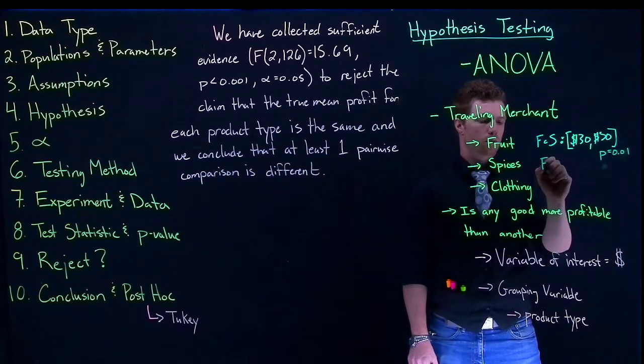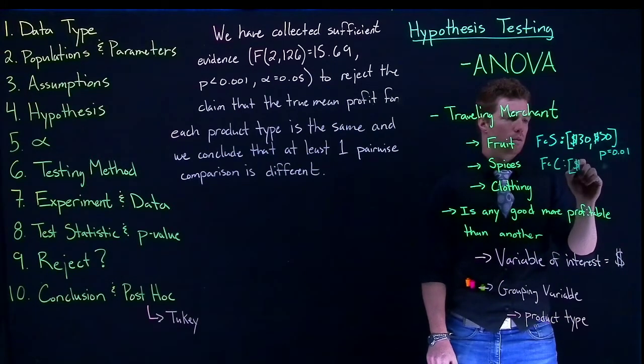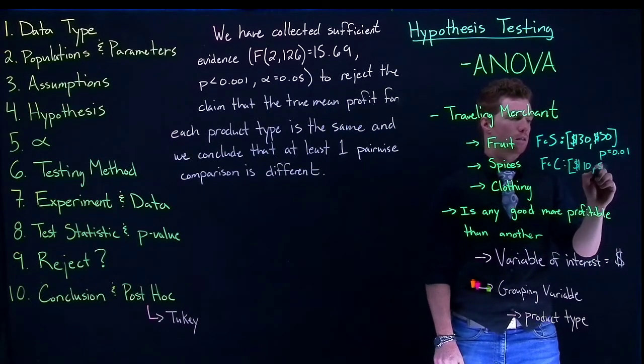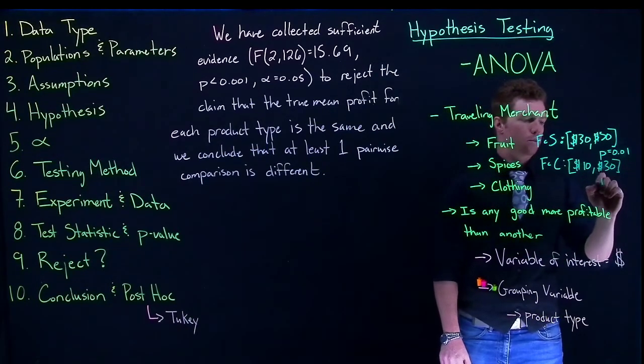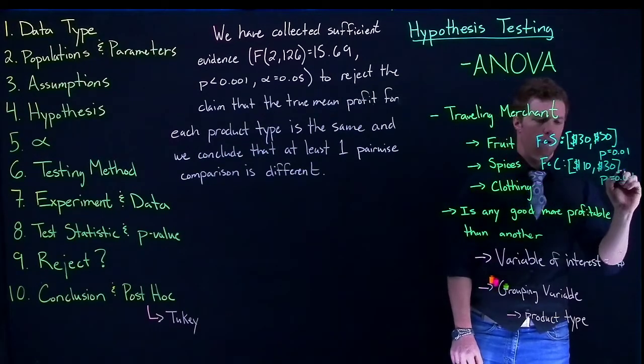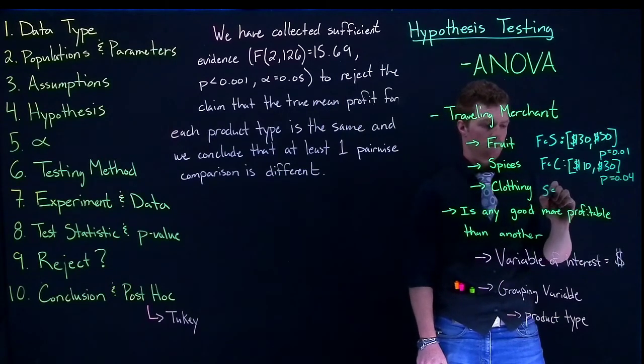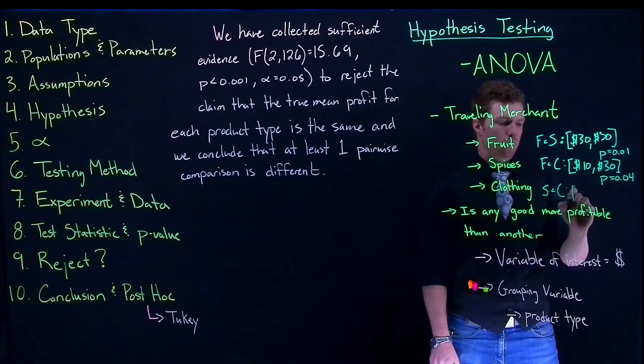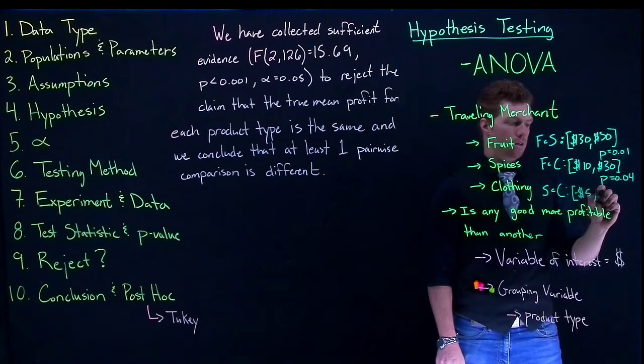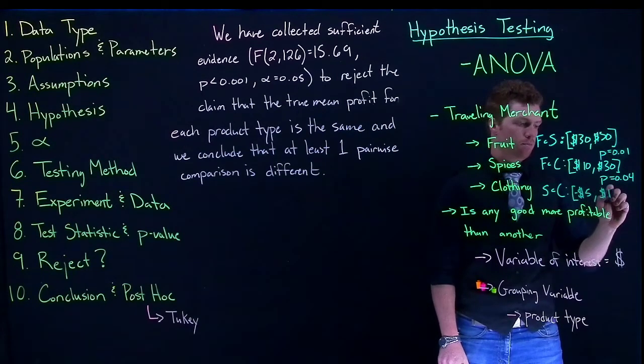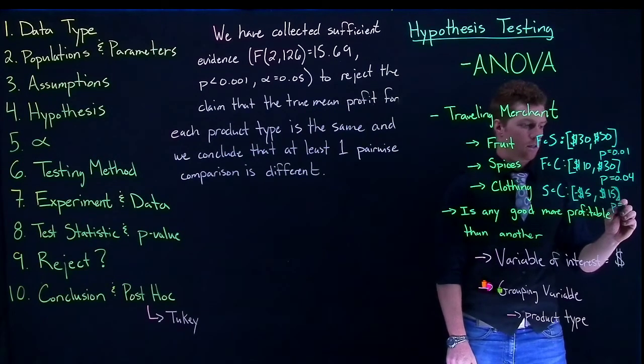And then we'll do fruit compared to clothing. We'll do 10, 30, and we'll do p equals 0.04. And then the last comparison that we have is spices compared to clothing. And we'll say that this is negative 5, 15, and we'll say that that is p equals 0.05.